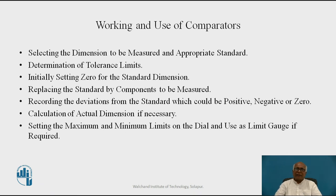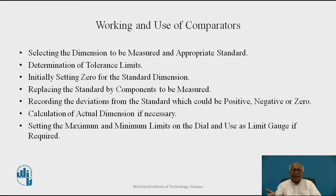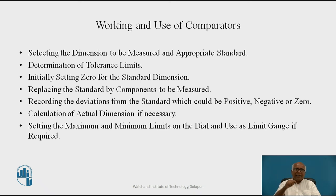Regarding the working and use of comparators: first, select the dimension to be measured and set an appropriate standard accordingly. Second, determine the tolerance limits — what is the maximum and minimum allowable deviation from the standard. The next step is initial setting to zero for the standard dimension. The expected dimension is set using a standard component or slip gauges, and the sensing element — normally a spindle or stylus — is touched to it, and zero is adjusted for this initial setting.